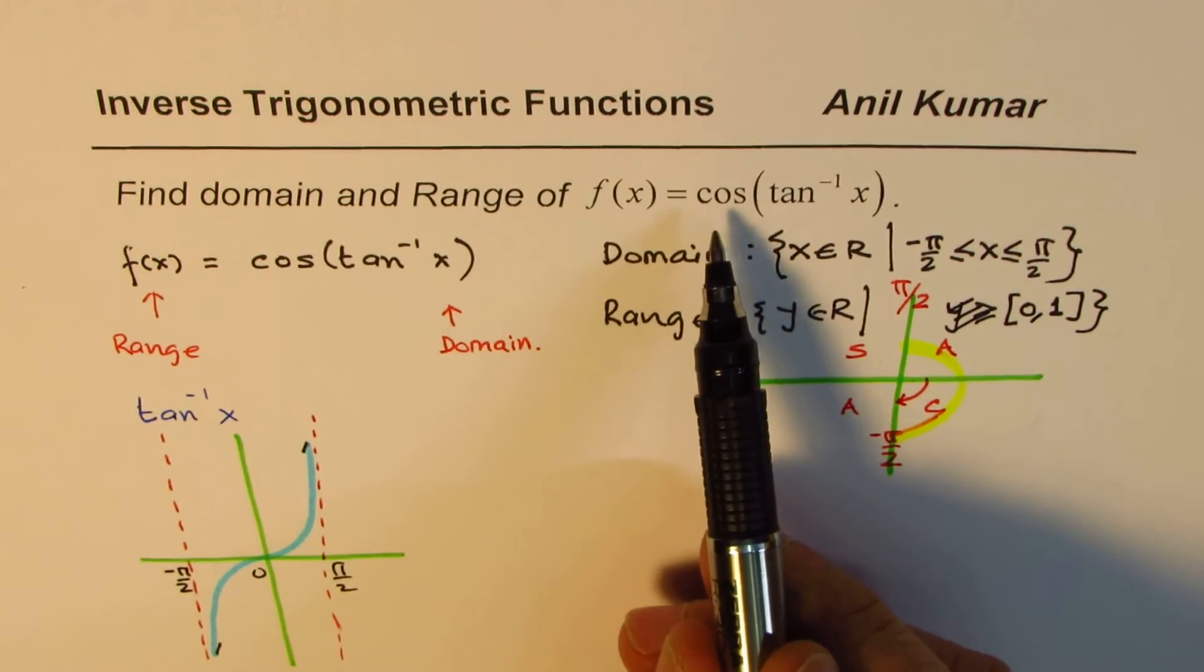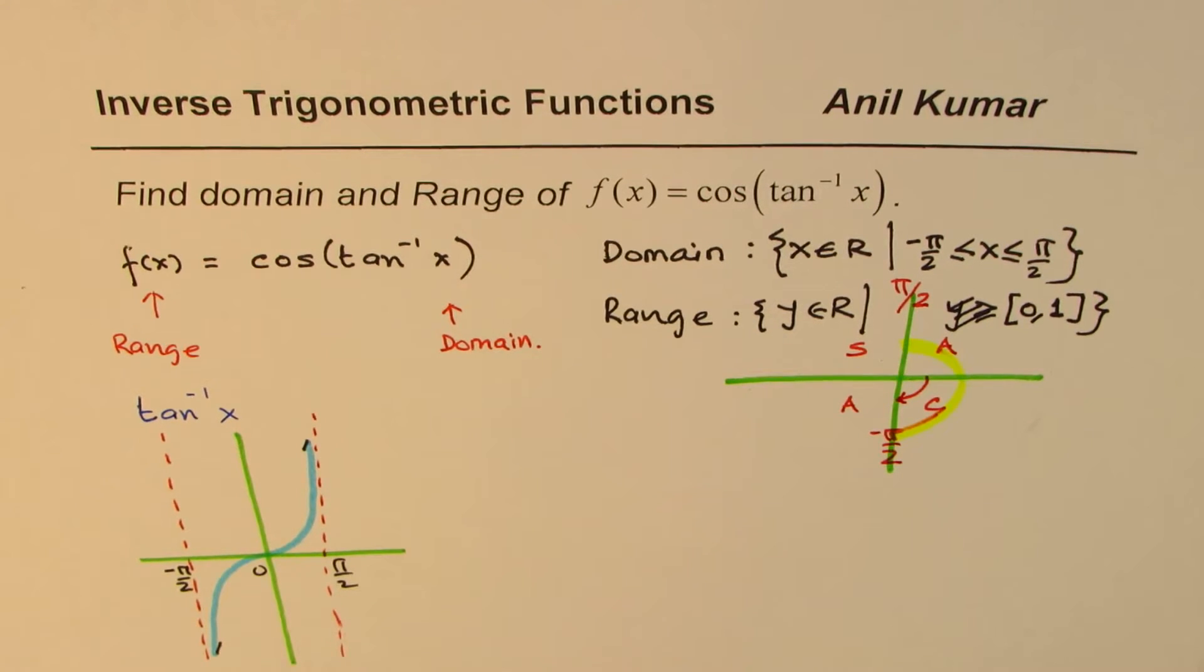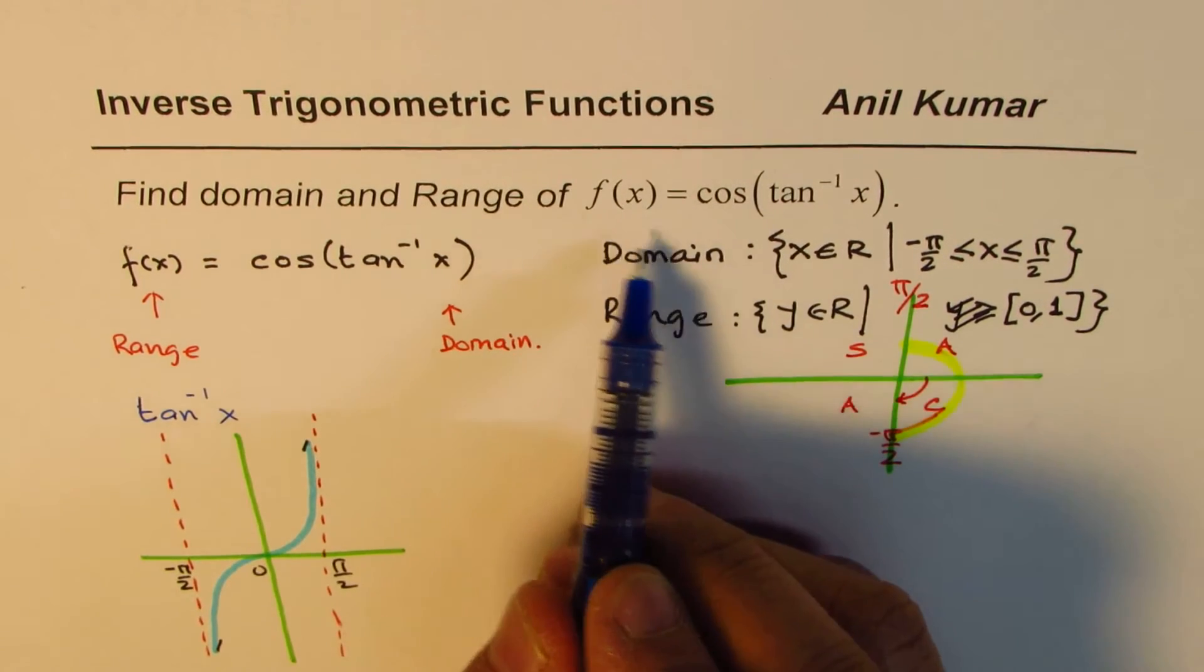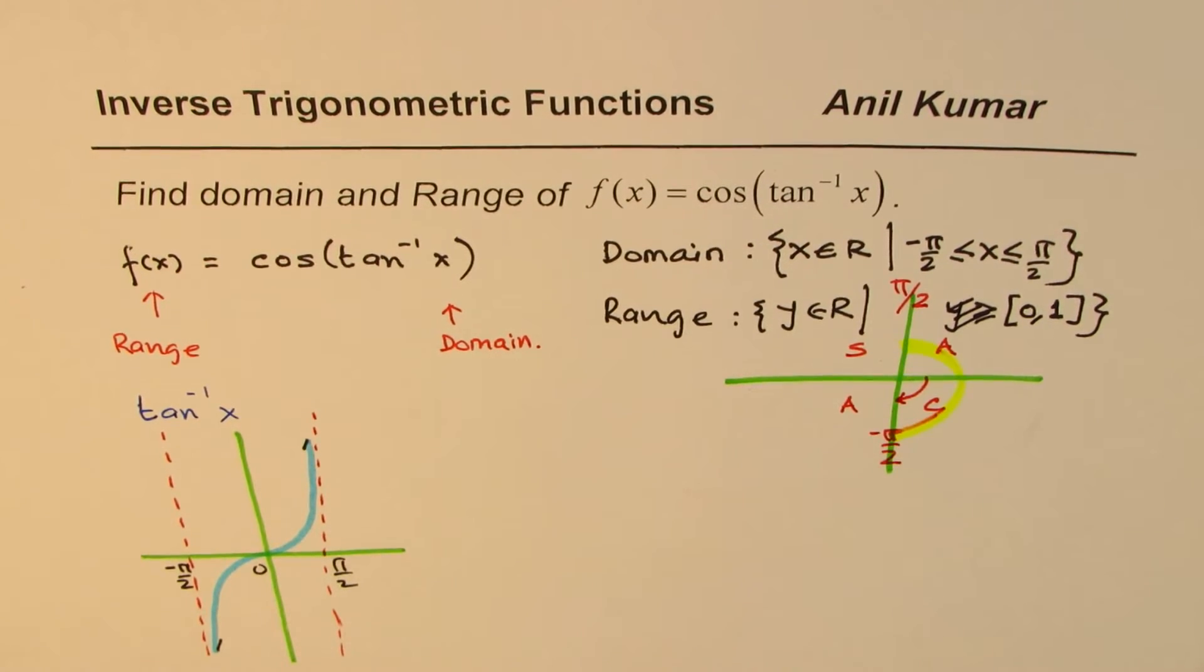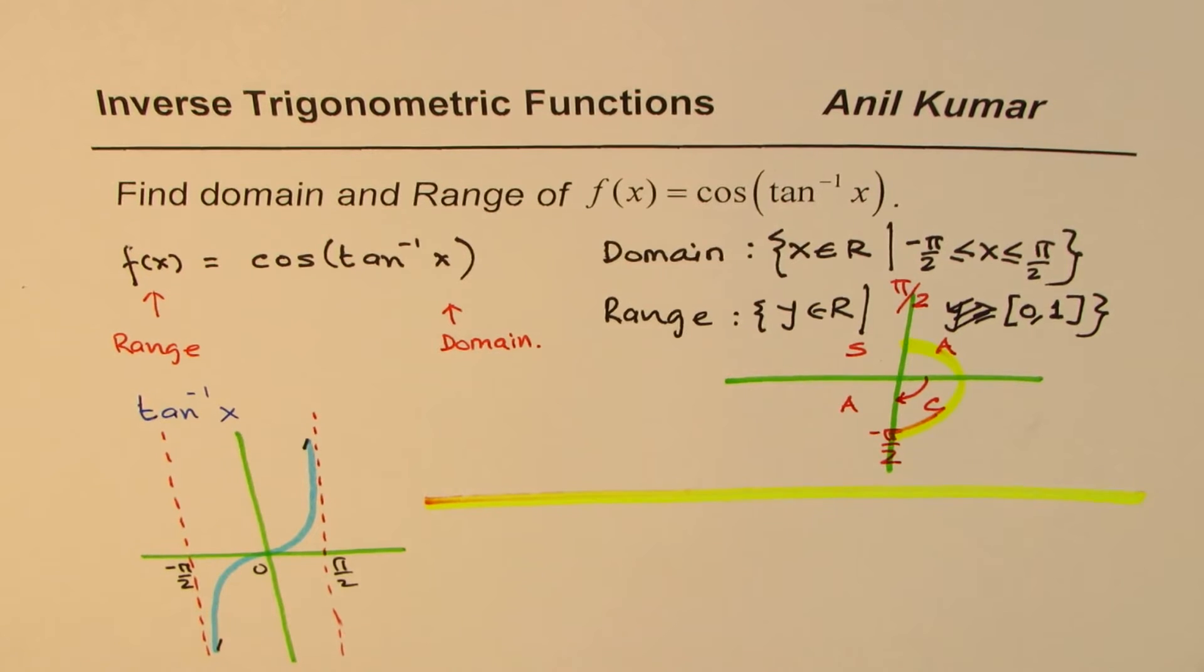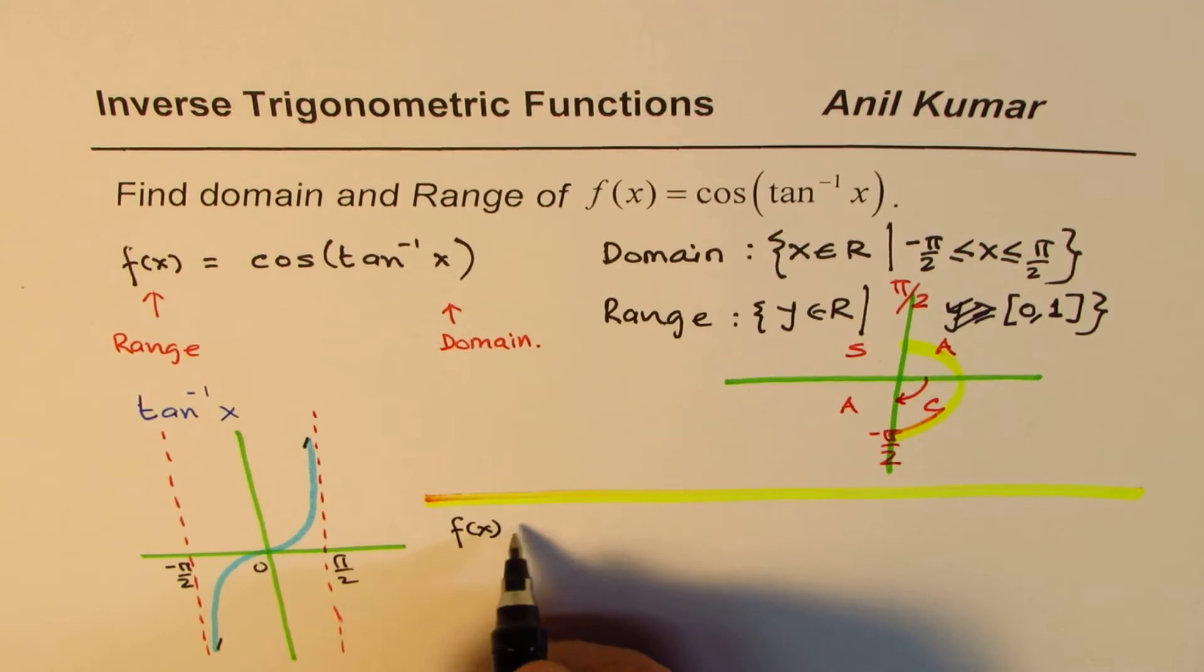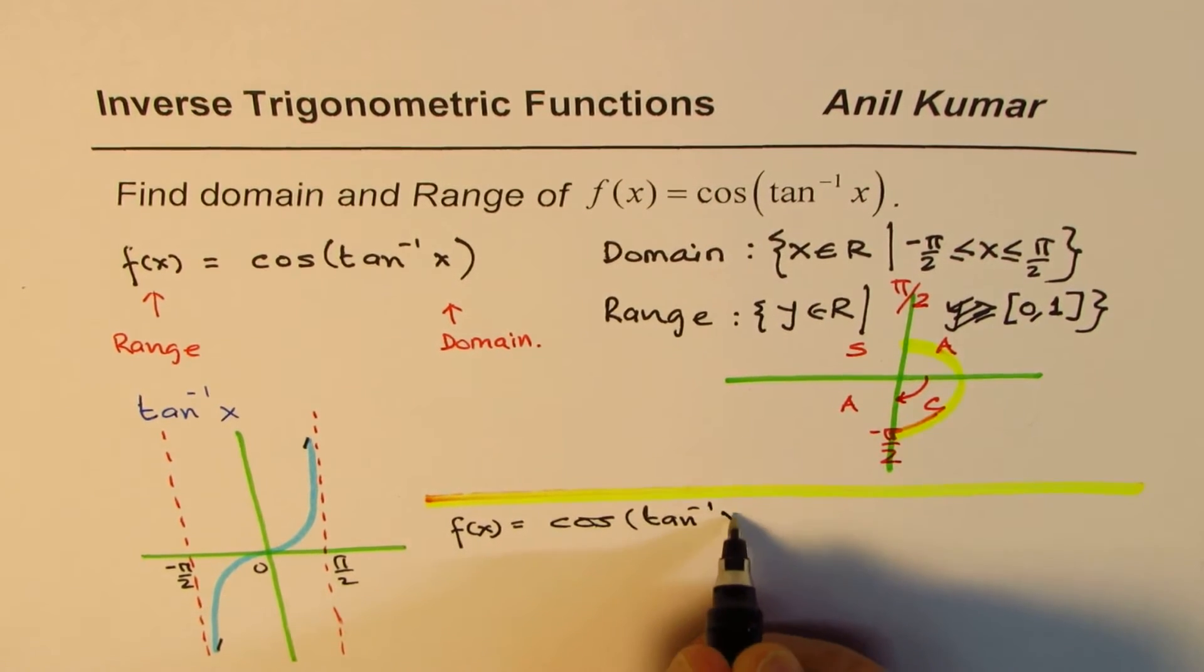Whenever you evaluate cos(tan⁻¹(x)), you always get non-negative answer. This is very important to understand. Now let us extend this and try to understand what is the value of this function. So let us redo a part of it, which is an extension to this question.